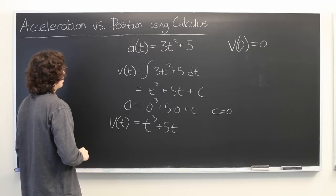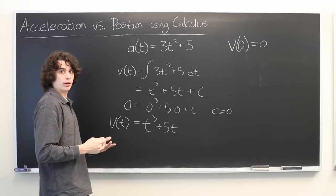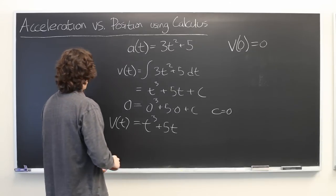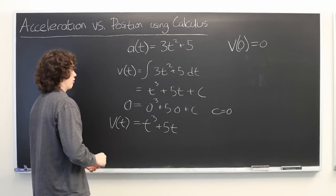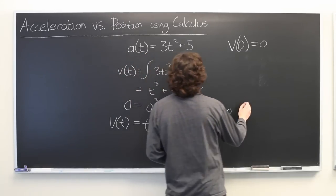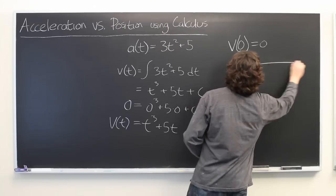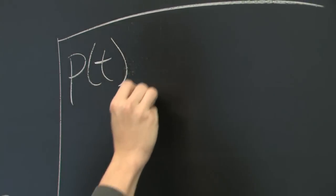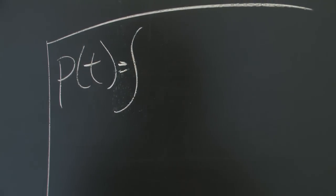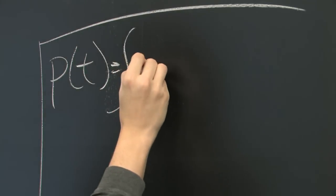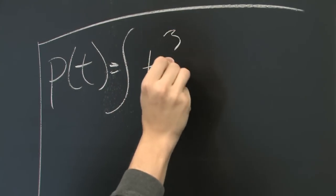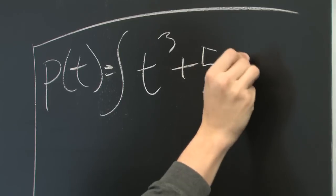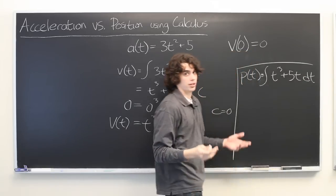That's still not quite what we want. What we're trying to get is the position as a function of time. So, we can simply take the indefinite integral again. We get p of t is going to be the indefinite integral of v of t, which as we said before, is t cubed, plus 5t, with respect to t.